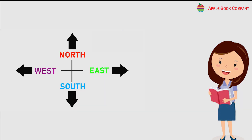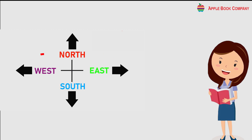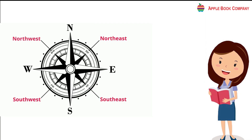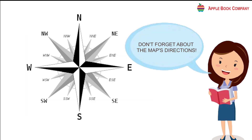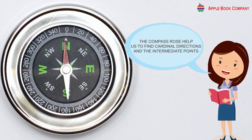Remember, we have four cardinal directions: North, East, West, and South. We also have four intermediate directions: Northeast, Northwest, Southwest, and Southeast. The compass rose helps us to find cardinal directions and the intermediate points.